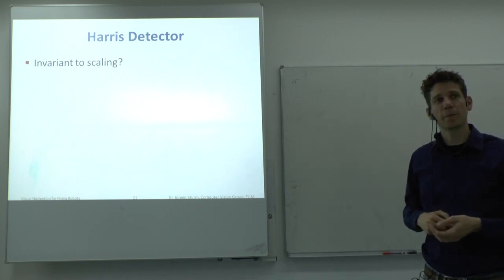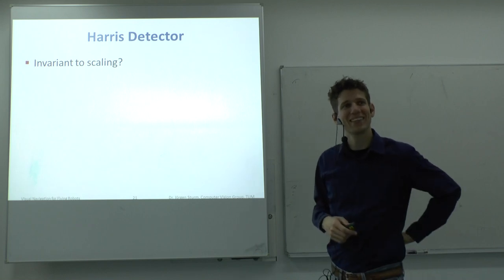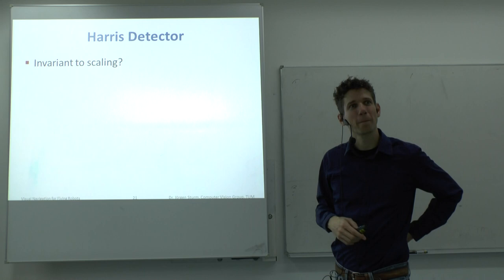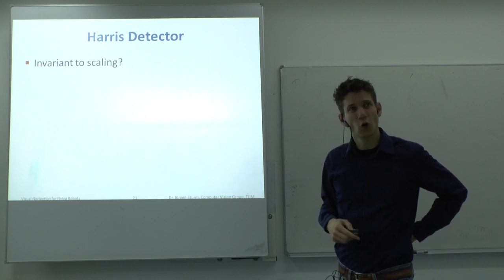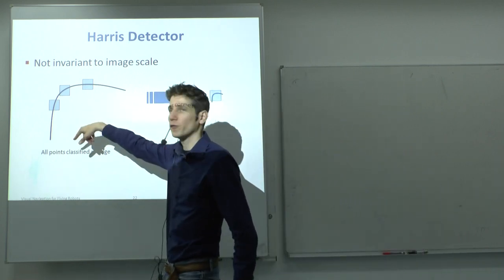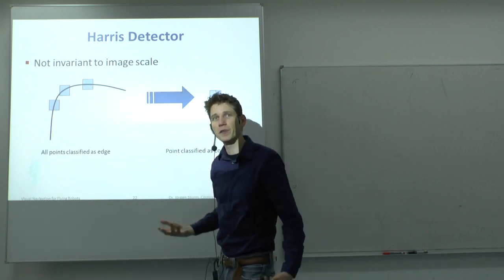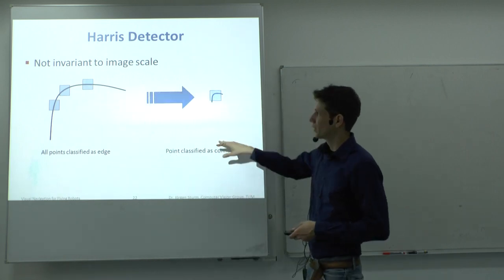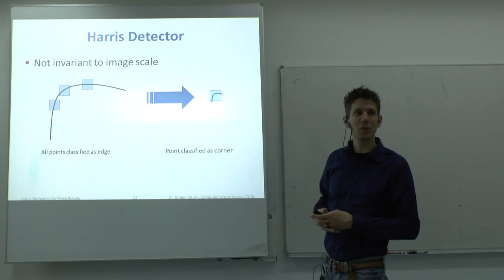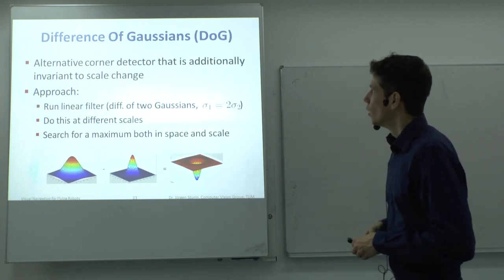Is the Harris detector invariant to scaling? No. If you decrease or increase the scale, some corners will be lost and treated as lines instead. For example, if you look at a curve, the line segments will be treated as edges, not corners. But if you zoom out, they suddenly become an edge. This means Harris is not invariant to scale.